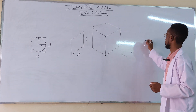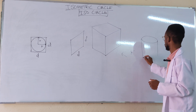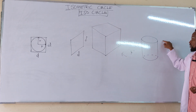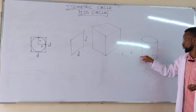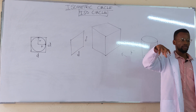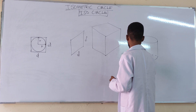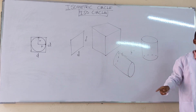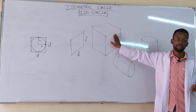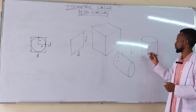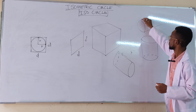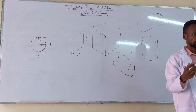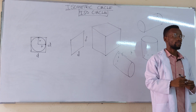For example, you can have a cylinder oriented so that the circles are on the top plane. Or a cylinder oriented so the circles are on the front plane. Or a cylinder oriented so the circles are on the side plane. What's important is for you to know how to draw an isocircle and to consider the plane on which that isocircle sits.